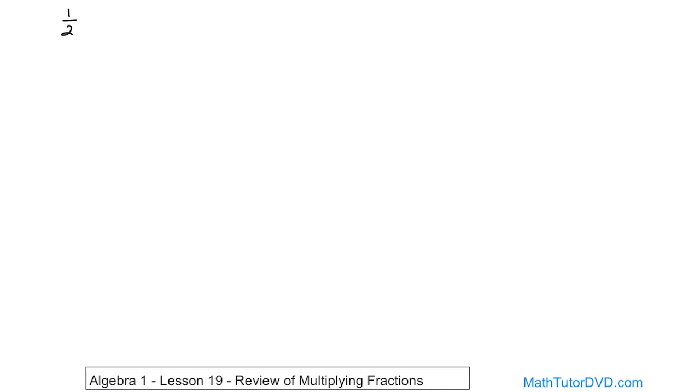What if you had the fraction 1 half multiplied by 5 sevenths? How do you do that? Well, we've been spending a lot of time with adding and subtracting fractions recently, and so you might think that you have to get some kind of common denominator. The good news is for multiplying and dividing fractions, you do not need to get this common denominator. In fact, that makes multiplying and dividing fractions a lot easier than adding and subtracting them. So don't even worry about a common denominator.